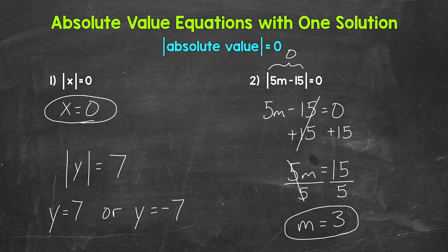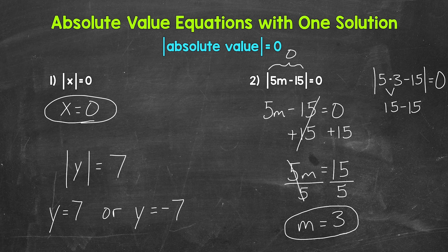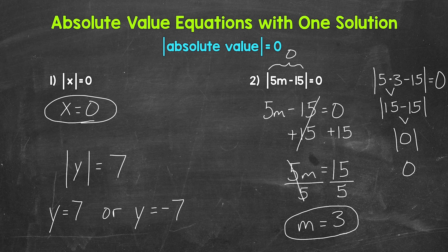We can check this solution by plugging in m equals 3. The absolute value of 5 times 3 minus 15 equals 0. 5 times 3 gives us 15, so we have the absolute value of 15 minus 15. 15 minus 15 is 0, and the absolute value of 0 is 0. So we are correct: m equals 3. Remember, if you have an equation where the absolute value is equal to 0, you'll have one solution — whether the absolute value is already isolated and equal to 0, or you need to isolate it first and it ends up equal to 0.